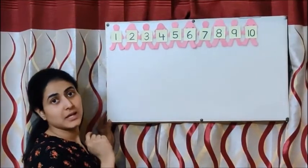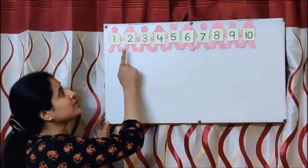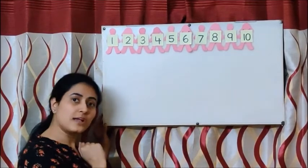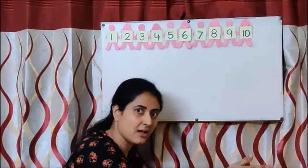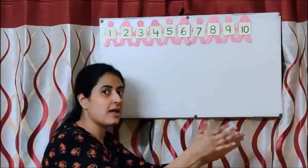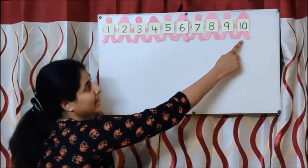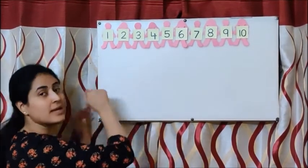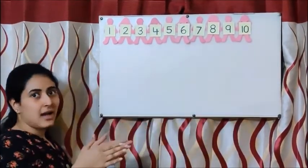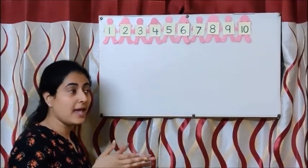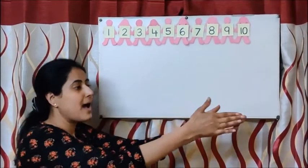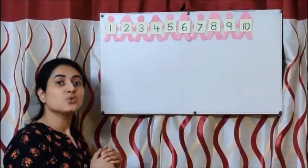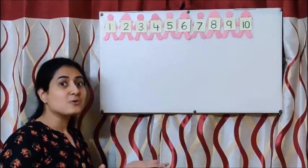And one more thing, children. When we say 1, 2, 3, 4, 5, 6, 7, 8, 9, 10, we are doing forward counting. Forward counting means aage jaana — going forward. And then when we do 10, 9, 8, 7, 6, 5, 4, 3, 2, 1, it means backward counting. So through this poem, we have also learned how to do forward counting and backward counting.